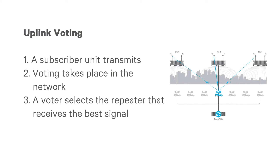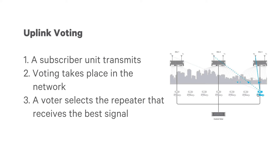A special box, such as a voter, selects the best possible audio from amongst the received signals, because all the repeaters are receiving that transmission from the subscriber unit. Such a network is called a voted network.